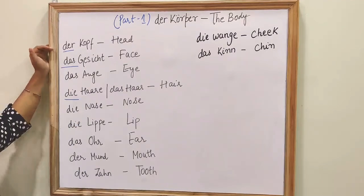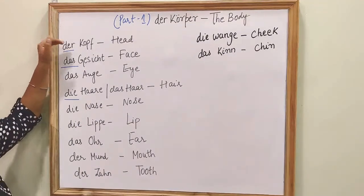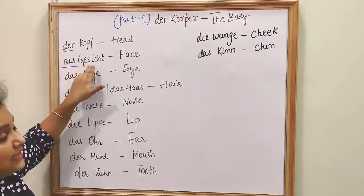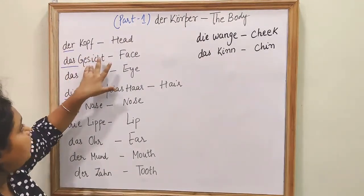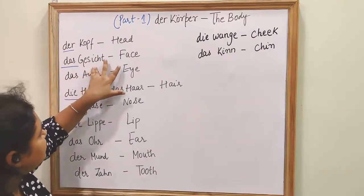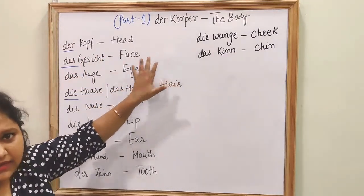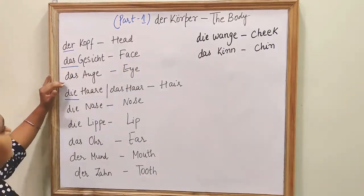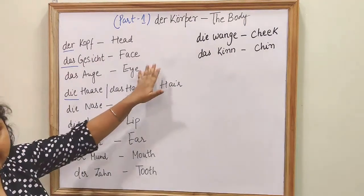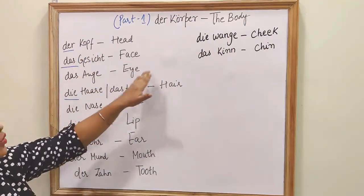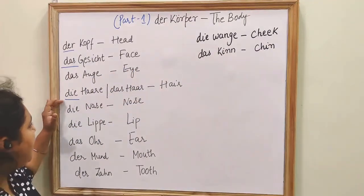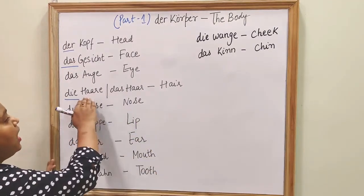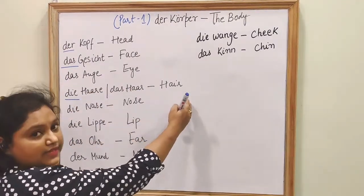So here I have written 'der Kopf'. 'Der Kopf' means head. 'Das Gesicht' — 'das Gesicht' is face. 'Das Auge' — 'Auge' is eye. 'Die Haare' — 'das Haar' is hair. I have written the plural form here. 'Die Haare' is the plural, 'das Haar' is the singular.